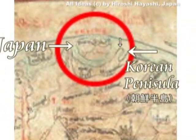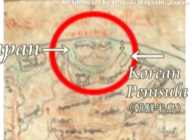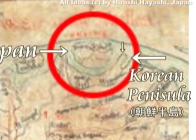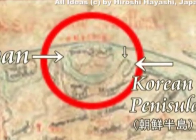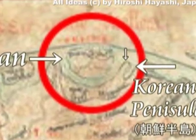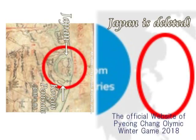Japan is a land where the sun rises. Why is it not in the South Korean official map? And why is it in the ancient map of the Holy Bible? You may already know the reason why.